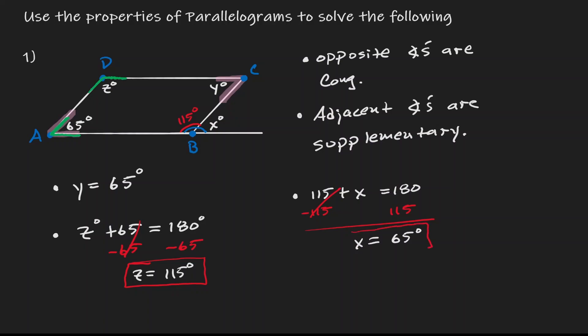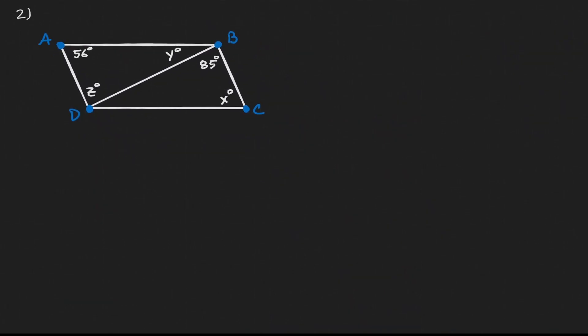Notice that the problem becomes more straightforward whenever we have a clear understanding of the properties. Anytime you're working with parallelograms, think about what properties you can use. For this next example, let's start by acknowledging we have a parallelogram: AB is parallel to DC and AD is parallel to BC. I know that opposite angles are congruent, so angle A is opposite to angle C, therefore X has a value of 56 degrees.